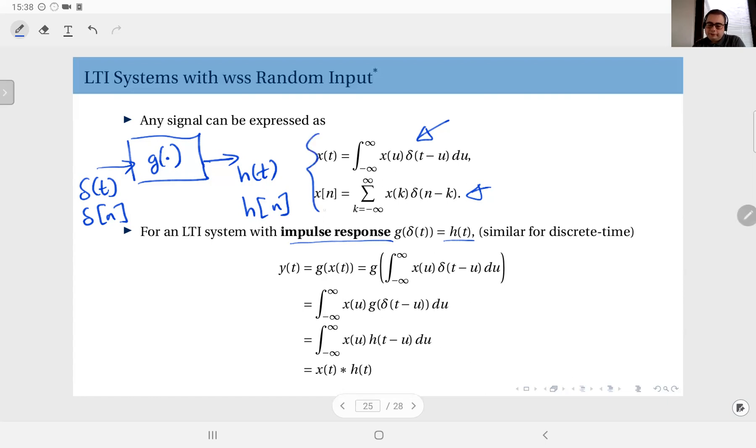Now since we have these decompositions of every signal, we can write them as well, the function g applied to the input x(t), and x(t) can be written as the integral of a weighted Dirac. And since x(u) here are just weights, they are just fixed numbers for each possible value of u, I can use the linearity of the system.